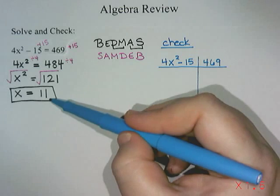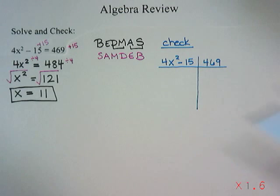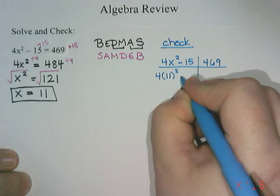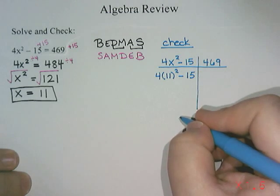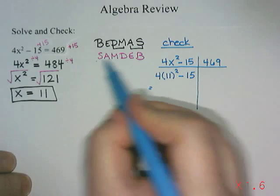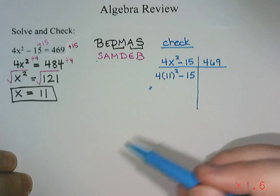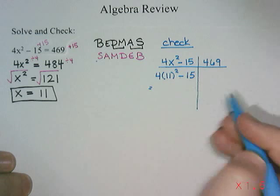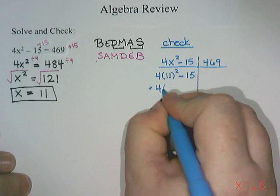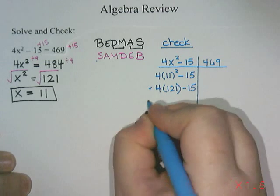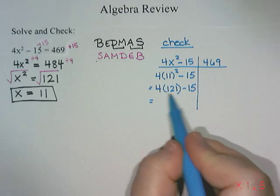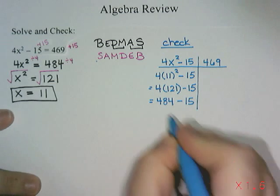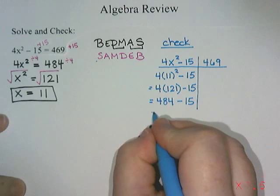I take 11 and everywhere I see an x I put in 11. So on the left side I have 4 times 11 squared take away 15. To evaluate this I use BEDMAS. There's nothing to do in the brackets, so I do the exponent: 11 to the power of 2 is 121. Then multiplication: 4 times 121 is 484. Then I subtract 15, and I get 469.